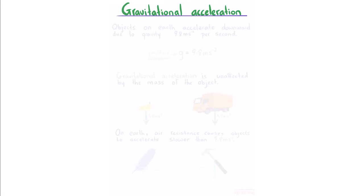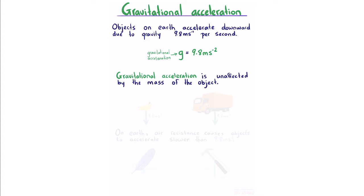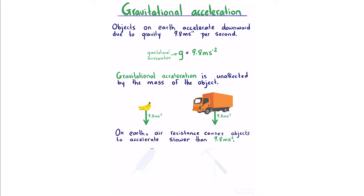Gravitational acceleration. Objects on Earth accelerate downwards due to gravity at 9.8 ms⁻². Gravitational acceleration is unaffected by the mass of the object, so whether it's a bunch of bananas or a much more massive truck, both accelerate at 9.8 ms⁻². However, on Earth, air resistance causes objects to accelerate slower than this, as do other forces such as buoyancy.